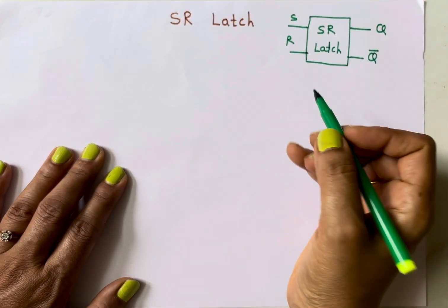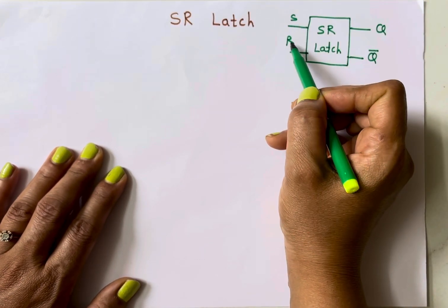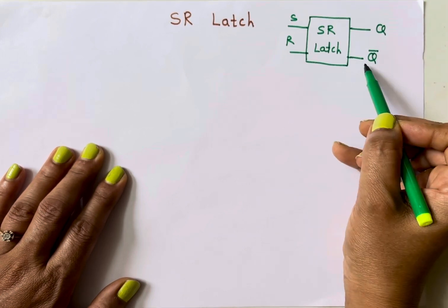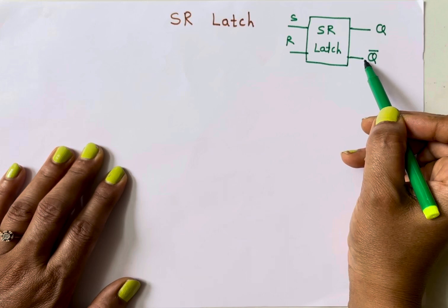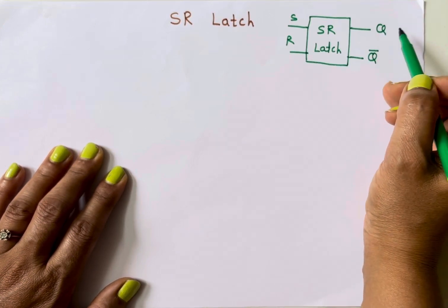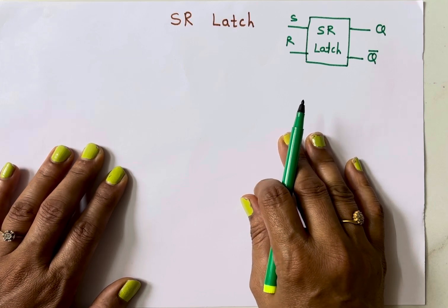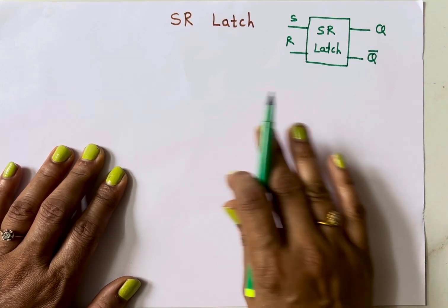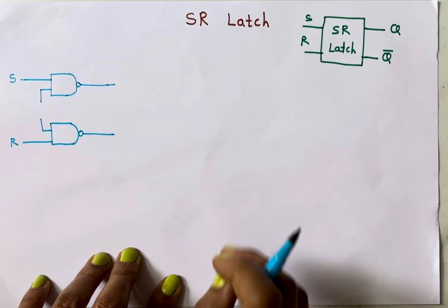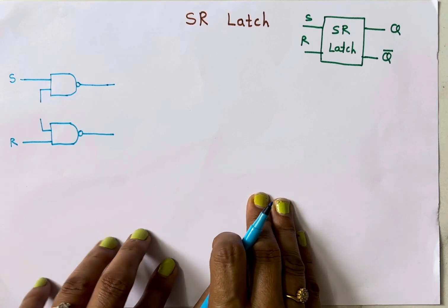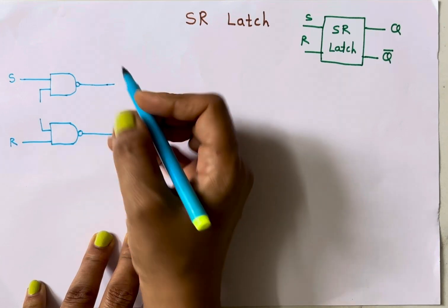This latch has two inputs S and R — that is set and reset — and two outputs Q and Q-bar. In a latch or flip-flop, the other output is always the complement of the first. We can implement this SR latch using either NAND gates or NOR gates. Here I'll demonstrate using both, starting with the NAND gate.